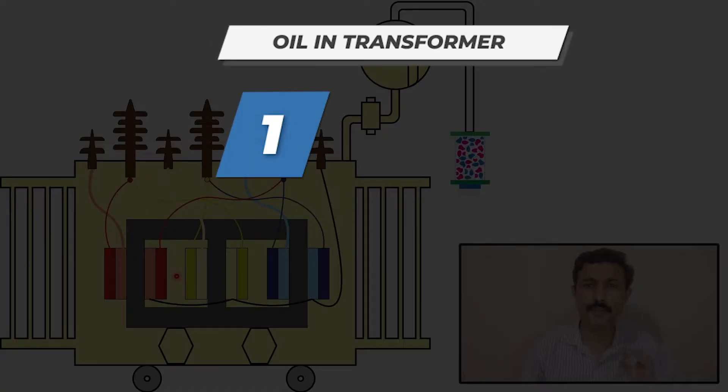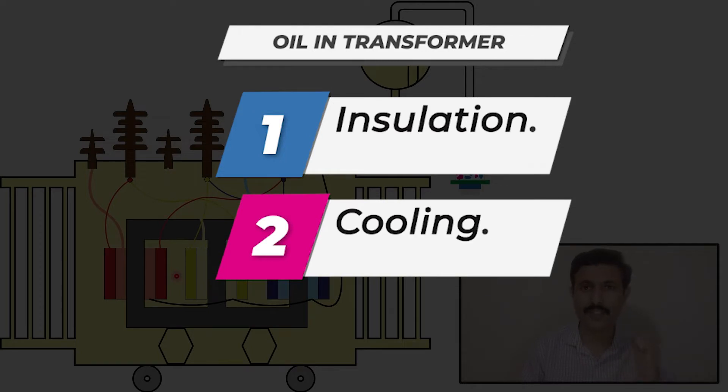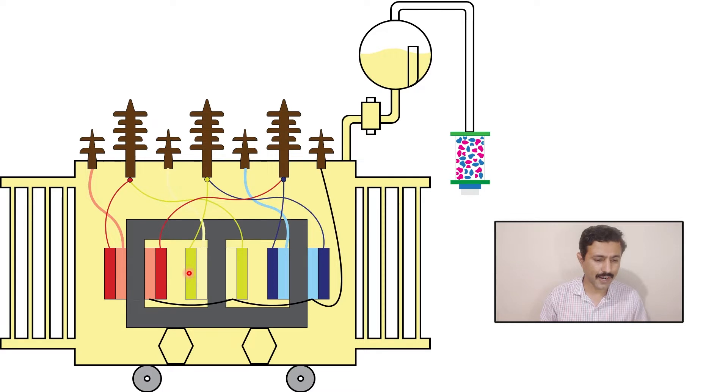The first purpose is to provide insulation and the second purpose is to absorb the heat from the winding. When these windings are heated too much, the oil in the transformer absorbs the heat and tries to cool down the windings. But on the other side, that oil gets heated. When the oil gets heated, its density becomes low.